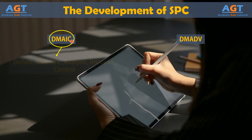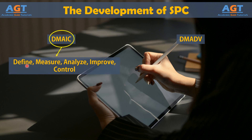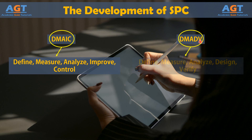DMAIC stands for Define, Measure, Analyze, Improve, and Control. These are the five phases of a Six Sigma project to improve a process that already exists. When developing a new process, teams use DMADV.